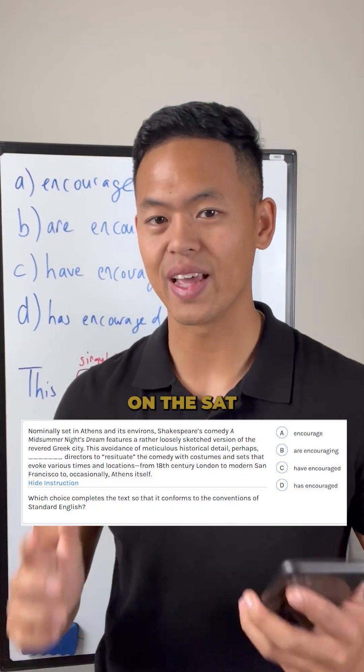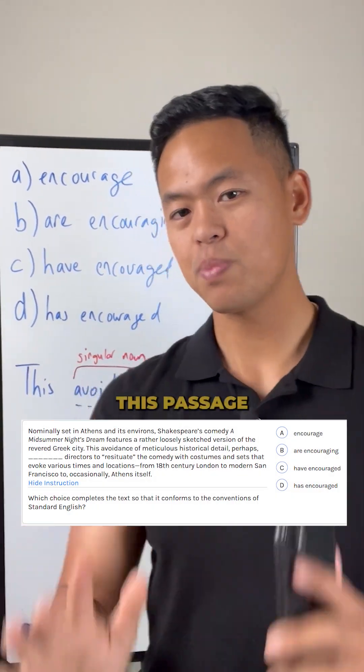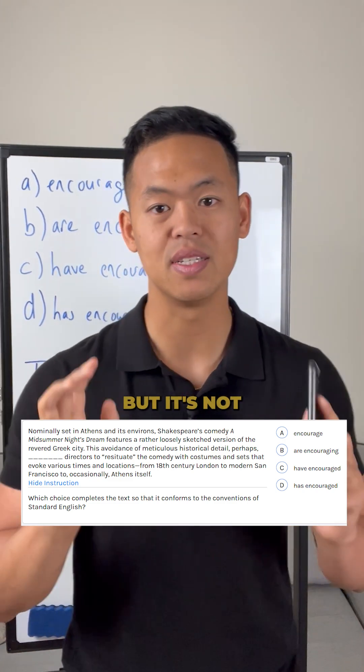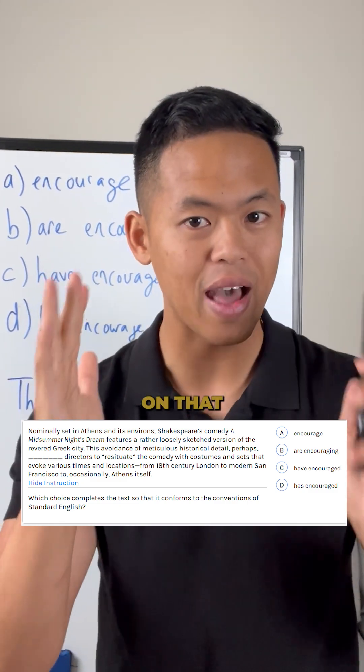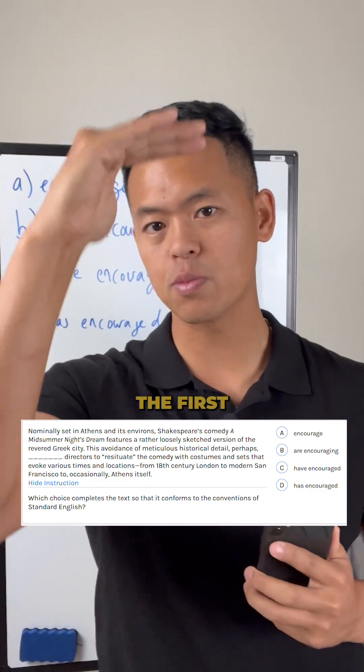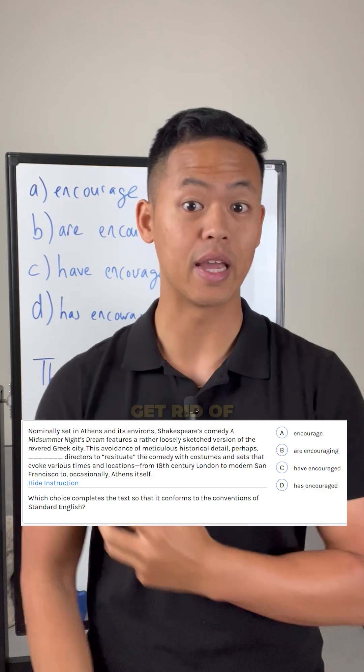This is a typical question on the SAT English exam. I know this passage looks like a lot, but it's not. Anytime you have a question that goes over verb forms, all you need to do is focus on that specific sentence, which means the first part of the paragraph we can just completely get rid of.